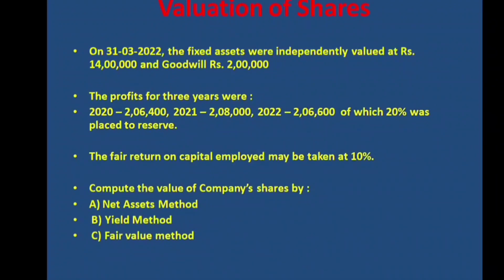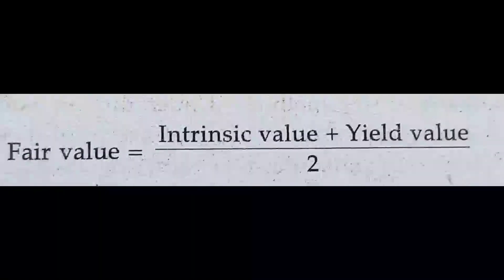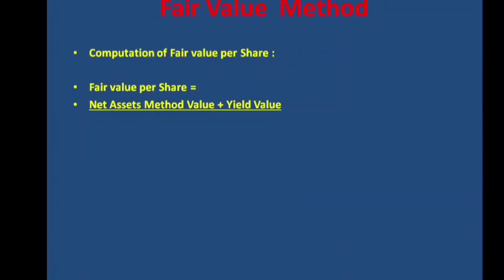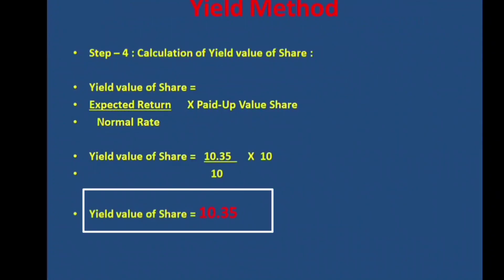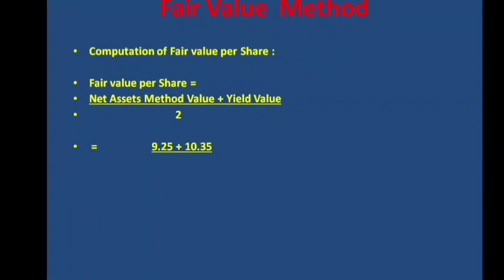The fair value method is straightforward: fair value = (net assets method value + yield value method value) ÷ 2. Net assets method value = 9.25 rupees; yield value method = 10.35 rupees. Fair value per share = (9.25 + 10.35) ÷ 2 = 19.60 ÷ 2 = 9.80 rupees per share.